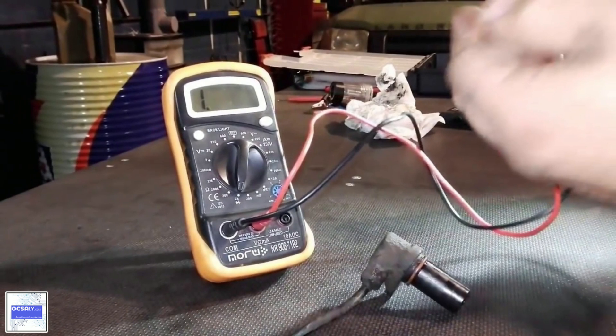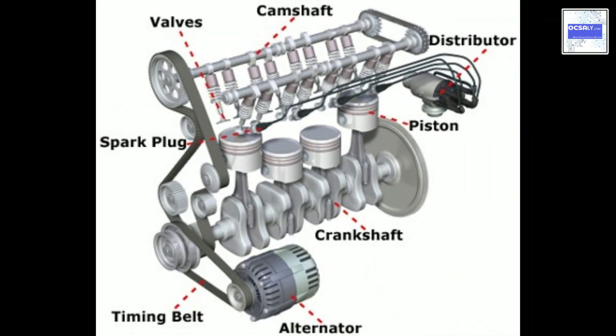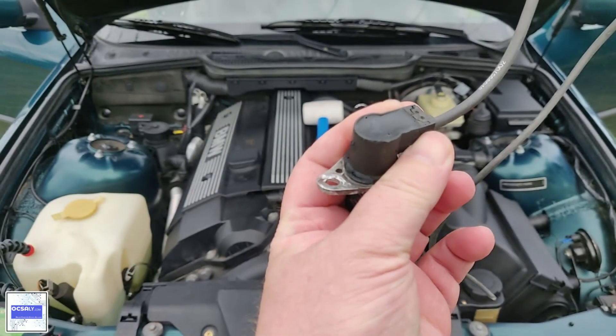How the crankshaft position sensor is tested: Whether there is a suspicion that the problem might be caused by a crankshaft position sensor or if there is a related trouble code, the sensor must be visually inspected for cracks, loose or corroded connector pins or other obvious damage.